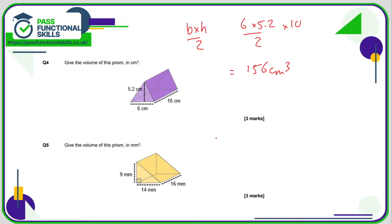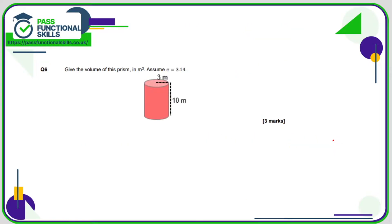Question 5 is very similar. The area of the face is 9 times 14 divided by 2, then we multiply that by the depth which is 16, and that comes to a total of 1,008 cubic millimeters.